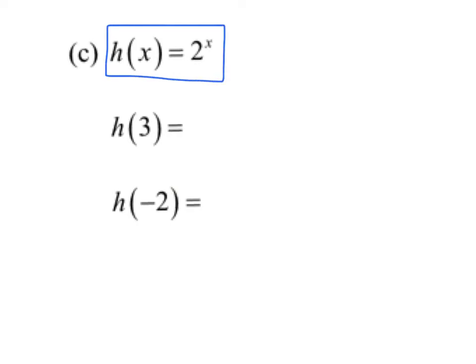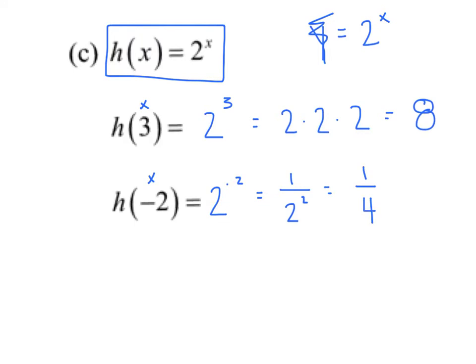Here's a new function defined as h of x. In the old days, we would have said y equals 2 to the x, but we're not going to write the y anymore. h of 3. So we're going to substitute a 3 in for the x. 2 raised to the third power. That's really 2 times 2 times 2. And I got an answer of 8. Now we're going to substitute a negative 2. 2 to the negative 2. All right, we're going to have to go back to algebra 1 and review how to handle that negative exponent. We're going to rewrite it as a fraction. And once we do so, the exponent's now positive. And of course, now I've got 1 fourth as my answer.